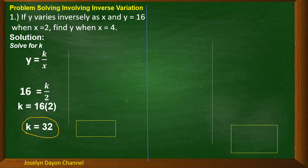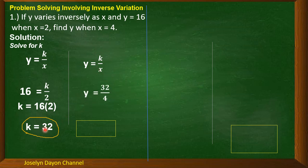Now, solve for y when x = 4. Using the same equation y = k/x, substitute k = 32 and x = 4: y = 32/4 = 8. So the value of y is 8 when x = 4.